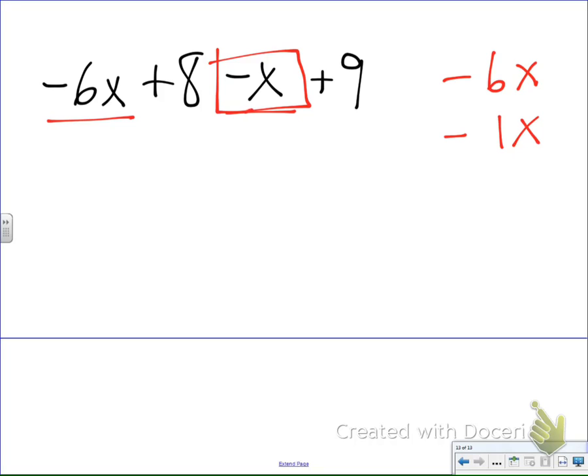So I'm going to come off to the side and I have negative 6x and I have negative 1x. Remember if there's no number right here in front of that x, it's a 1. So now this one's nice and easy. I have 6 negatives. I have one more negative. That's going to take me to negative 7x. So these two x's are going to give me negative 7x.